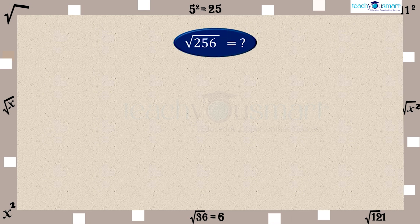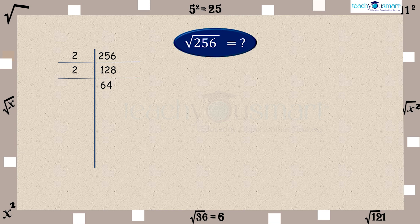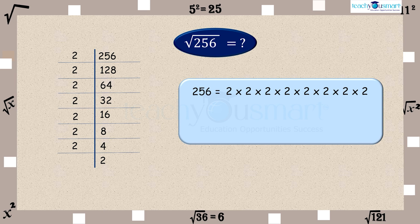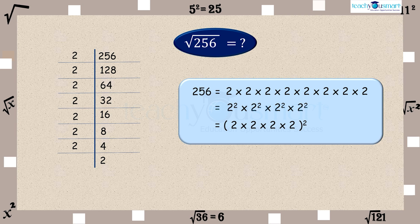Now try to find out the square root of 256. 256 equals 2 multiplied by 2 multiplied by 2 multiplied by 2 multiplied by 2 multiplied by 2 multiplied by 2 multiplied by 2. Pairing each 2s, 256 equals 2 squared multiplied by 2 squared multiplied by 2 squared multiplied by 2 squared, which equals (2 multiplied by 2 multiplied by 2 multiplied by 2) whole squared, equals 16 squared. Therefore, the square root of 256 equals 16.